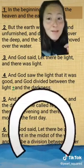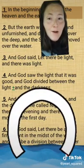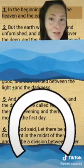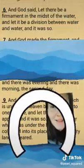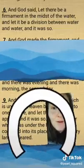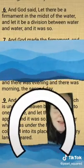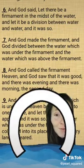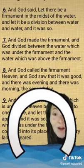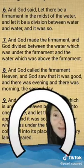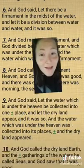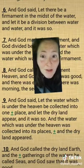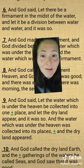And God said, let there be a firmament in the midst of the water, and let it be a division between water and water. And it was so. God made the firmament and divided between the water under the firmament and the water above the firmament. And God called the firmament heaven. Then God said, let the water under the heaven be collected in one place, and let the dry land appear. And it was so.